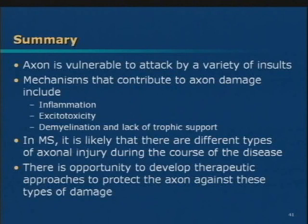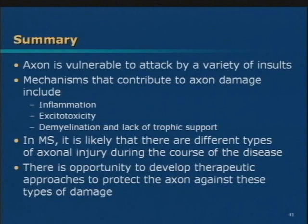The axon is a vulnerable structure. It can be damaged by a variety of insults — inflammation, ischemia, loss of blood supply, toxic things. The lack of myelin leaves the axon vulnerable to these insults, making it more sensitive and harder for it to survive. In MS, at least, we think there are different kinds of injury, and each one provides an opportunity to develop a drug or treatment strategy that could interfere and improve that.